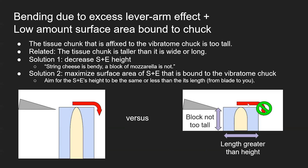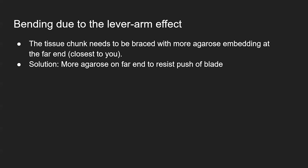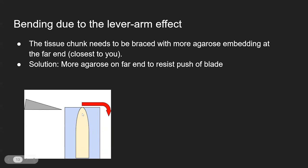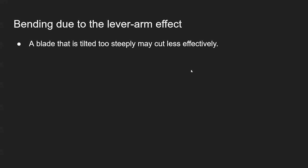Once you have that situation, you're going to have less of the bending-type problem. There's another thing related to the lever arm effect: you could also try to brace or support the tissue by providing more agarose on the side where bending is most likely to happen. You don't need more agarose on all sides — just on the user side, the part of the chunk closest to you. If you have a thick chunk of agarose there, it will help brace it so it doesn't bend over so easily.